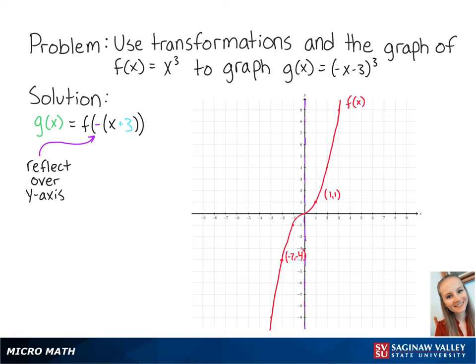So our new points are now at (-1, 1) and (2, -4). Connecting the points, we get the graph of f(-x).